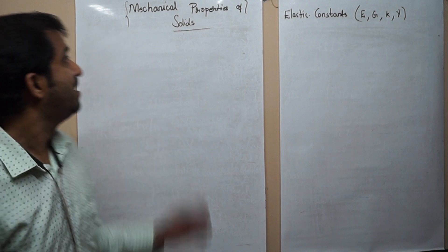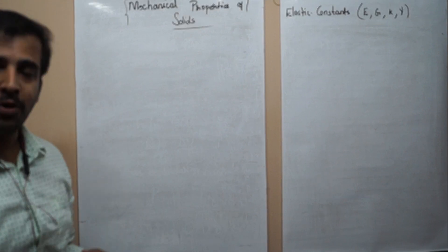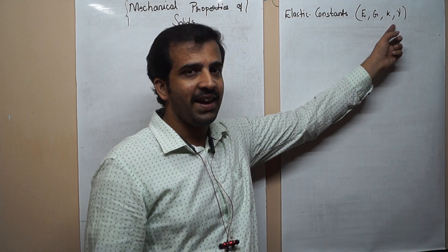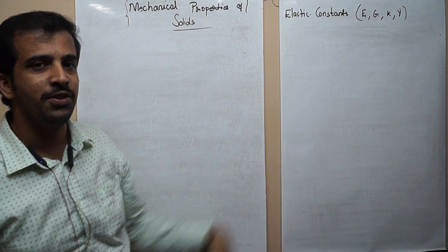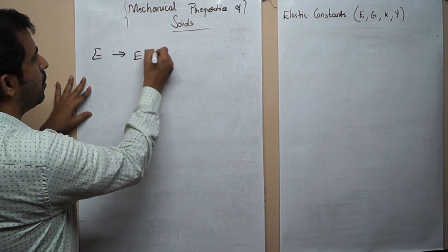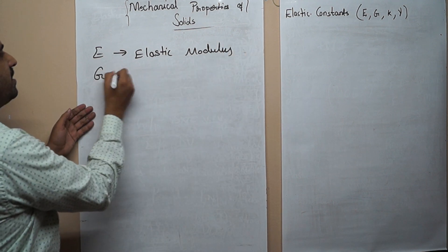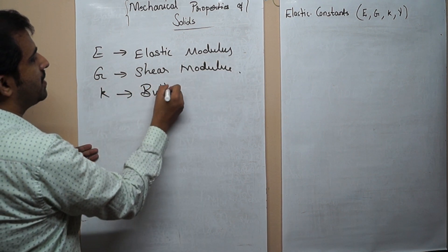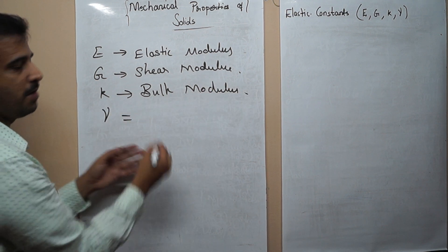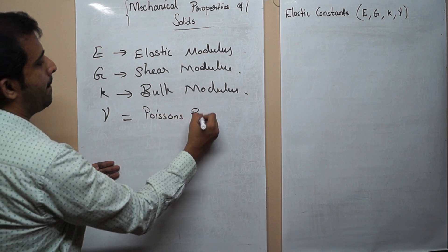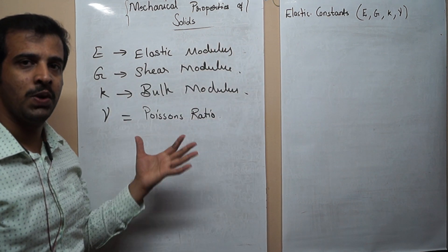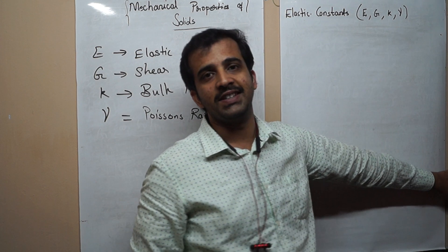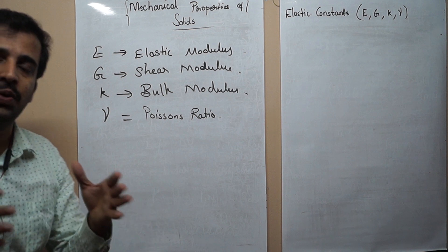Hello friends, today we will deal with the topic mechanical properties of solids. For studying the mechanical properties of solids, we should be aware of some elastic constants, known as E, G, K, and nu. E is the elastic modulus, G is the shear modulus, K is the bulk modulus, and nu is Poisson's ratio. These three moduli along with Poisson's ratio are required to specify the property of a material, and therefore they are known as the elastic constants.